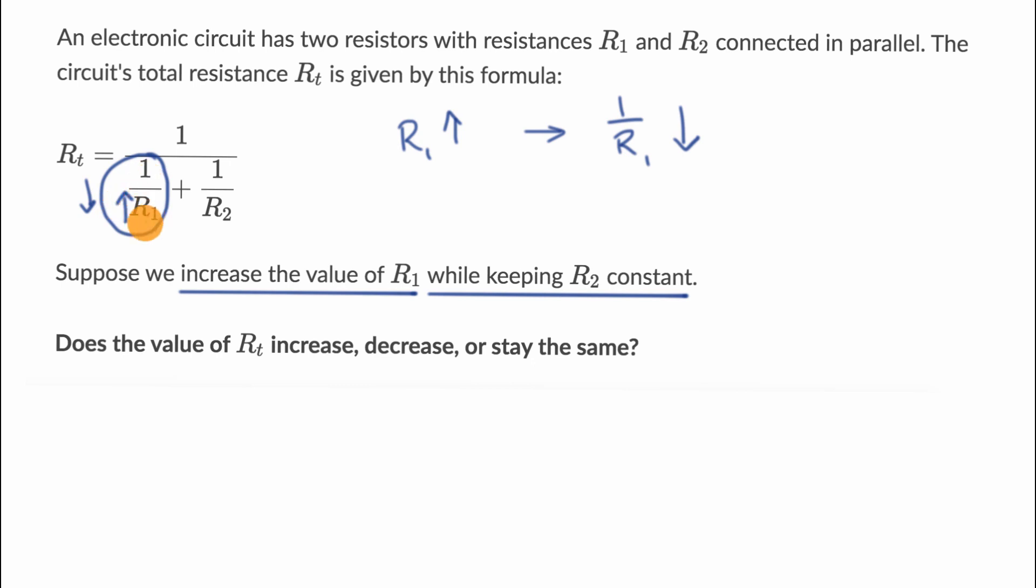Now, if one over R1 is decreasing, what's going to happen to one over R1 plus one over R2? Will this entire expression increase or decrease? Well, this part is staying constant. R2 is constant, so one over R2 is constant. Just imagine, R2 could be two or three, so this should just be one half or one third or whatever it is, while over here, this part of the expression is going down.